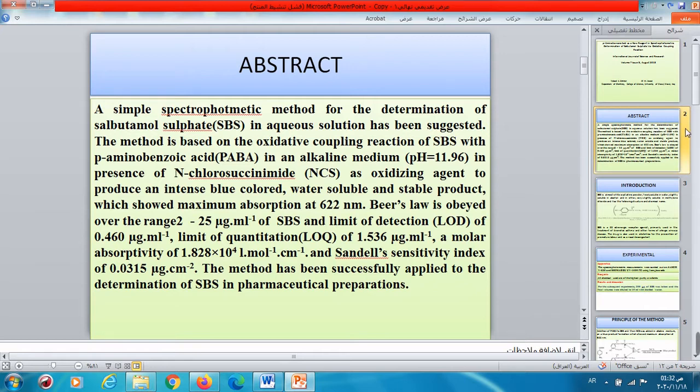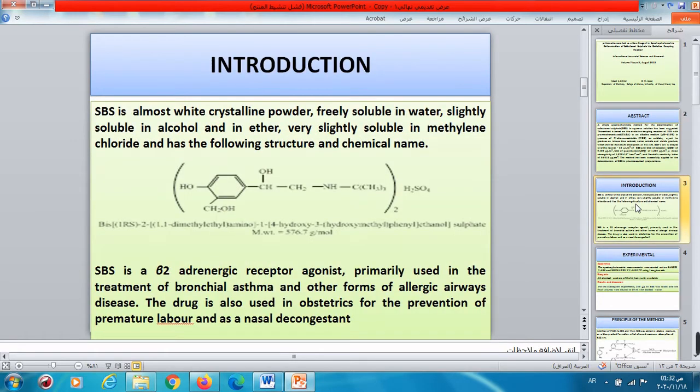The method has been successfully applied to the determination of salbutamol sulfate in pharmaceutical preparations. Introduction: Salbutamol sulfate is almost white crystal powder, freely soluble in water, slightly soluble in alcohol and ether, very slightly soluble in methylene chloride and has the following structure and chemical name. The hydroxide group is the main functional group of our reaction. Salbutamol sulfate is used to manufacture many drugs.